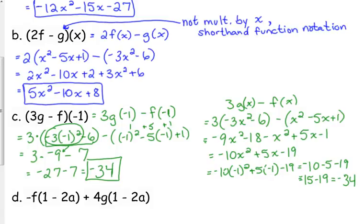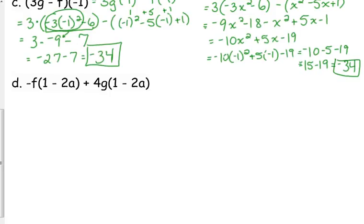Okay, so, whichever way you want to do it. It's not really shorter either way. It may be a little bit shorter to just plug it in. Plug in negative 1 to both functions and then do the combination. But, it's just whichever way you prefer. Okay, now, D is really weird looking. D is really weird looking. So, let's look at D.